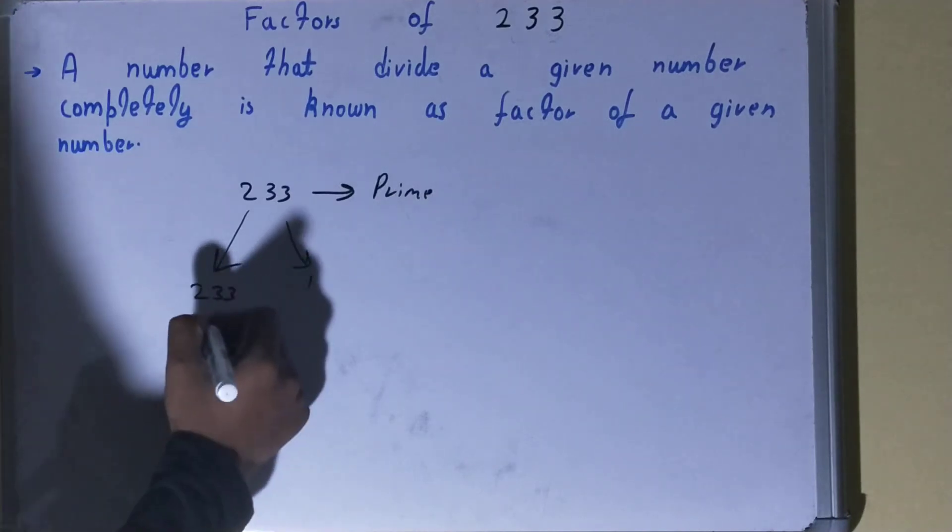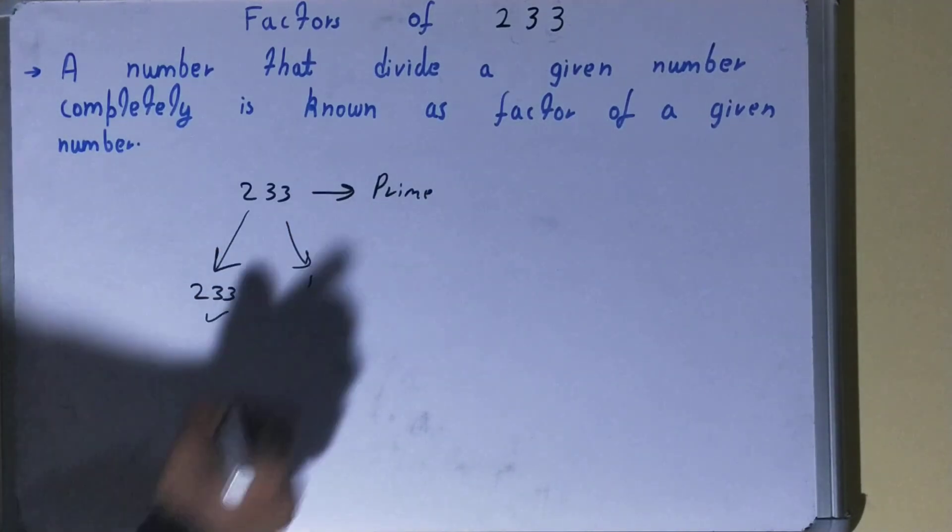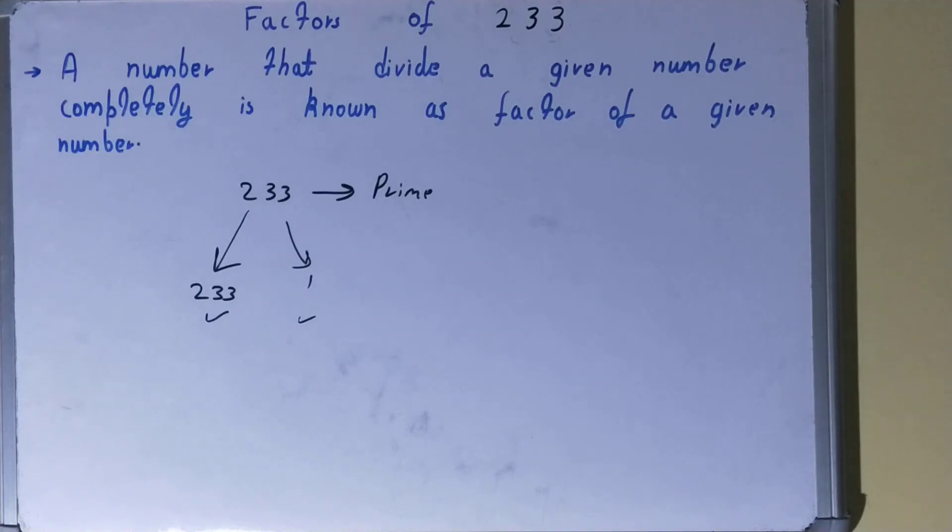So we can say that the factors of the number 233 are 233 and 1. So this was all about factors of the number 233.